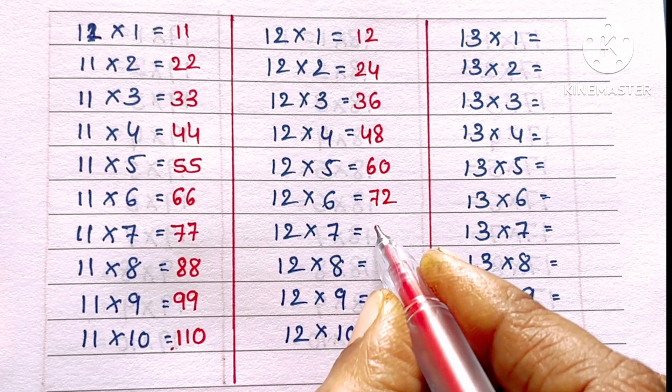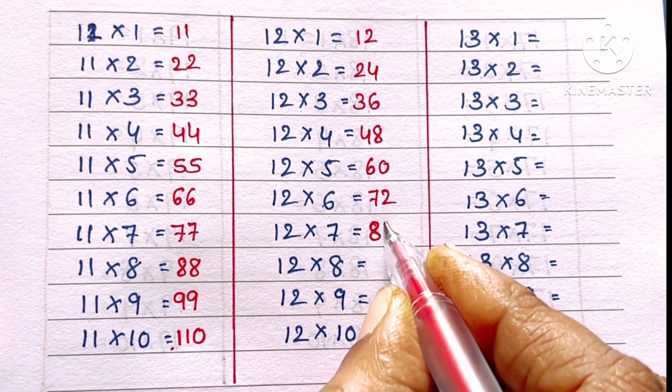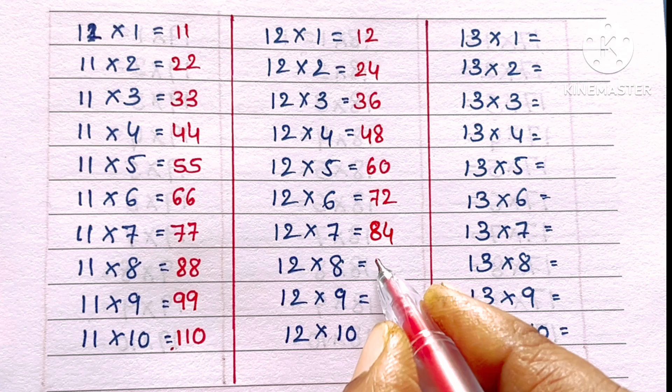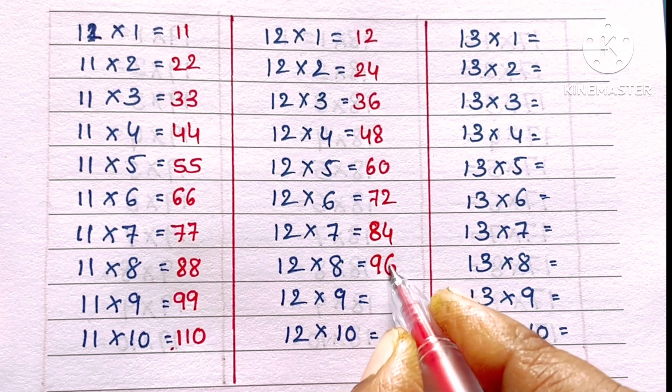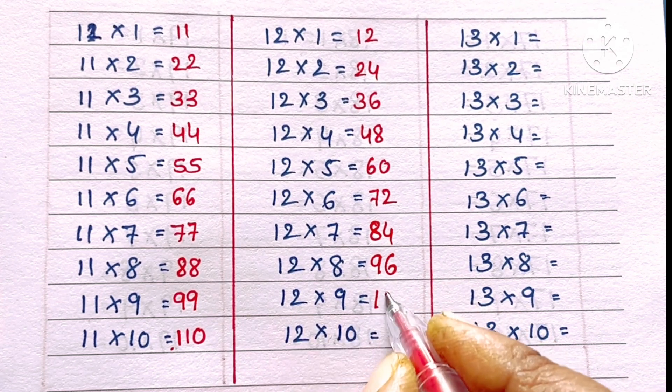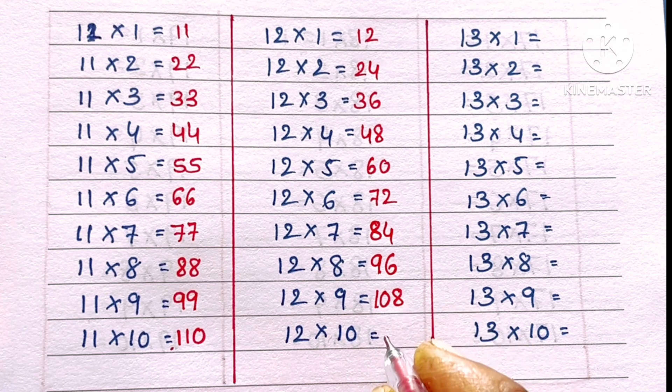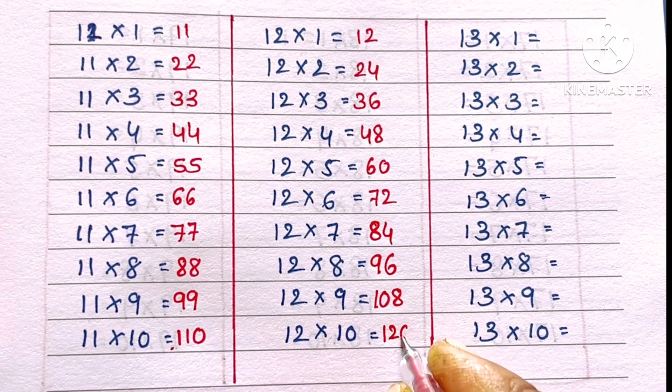12 sixes are 72, 12 sevens are 84, 12 eights are 96, 12 nines are 108, 12 tens are 120.